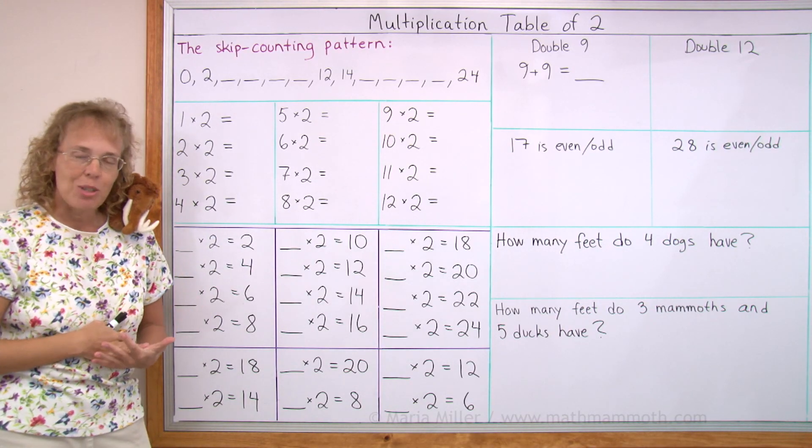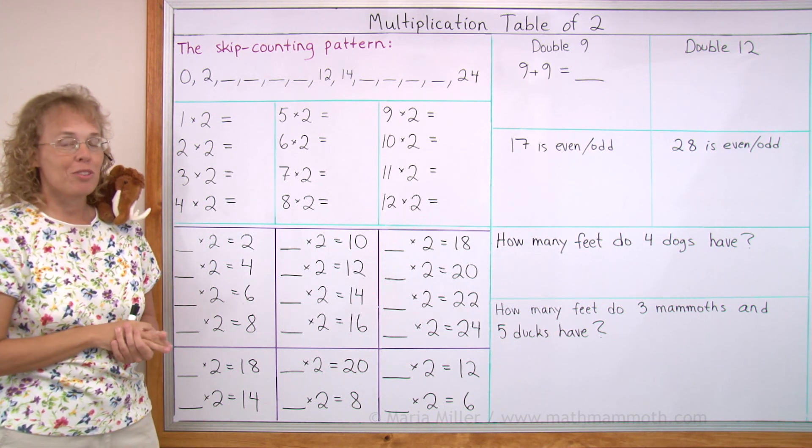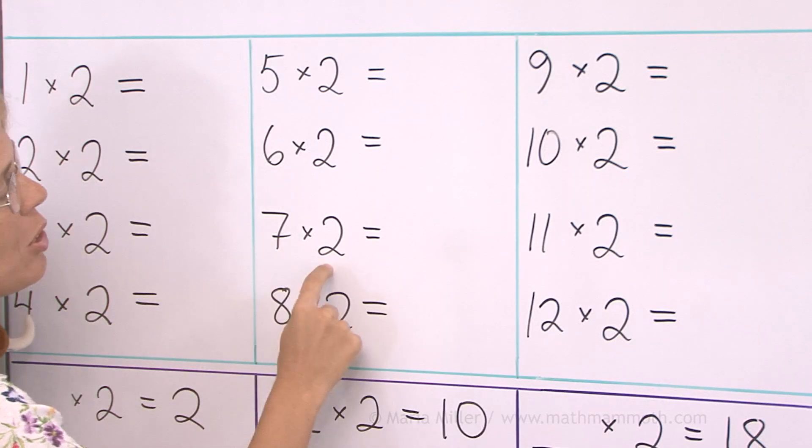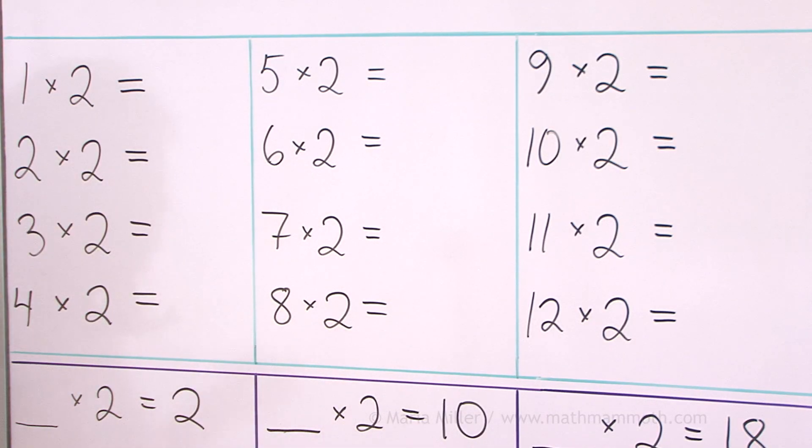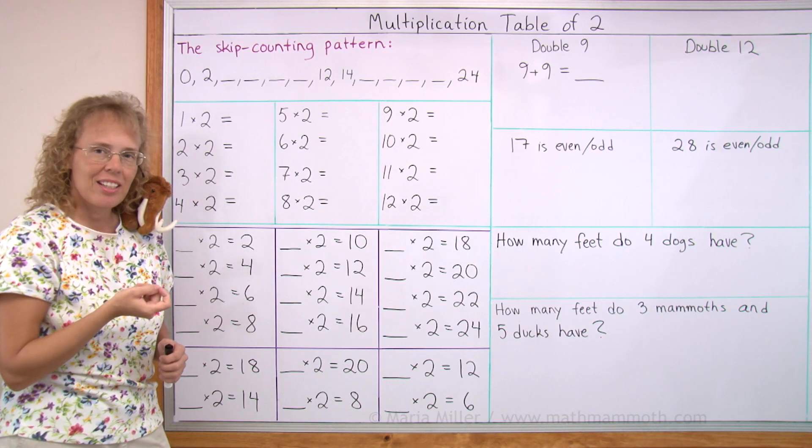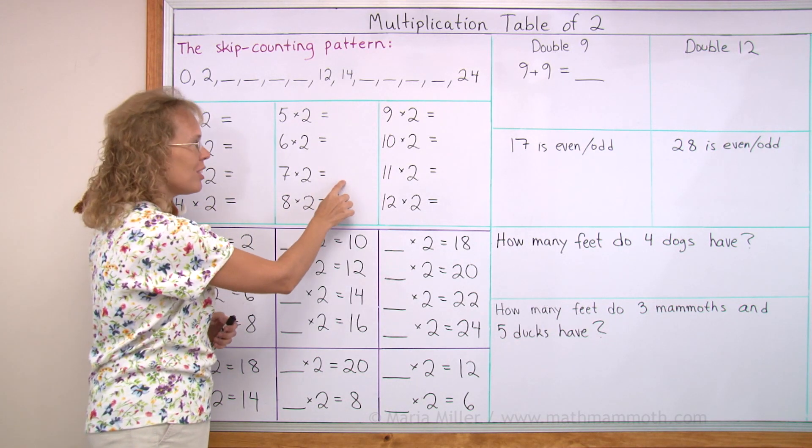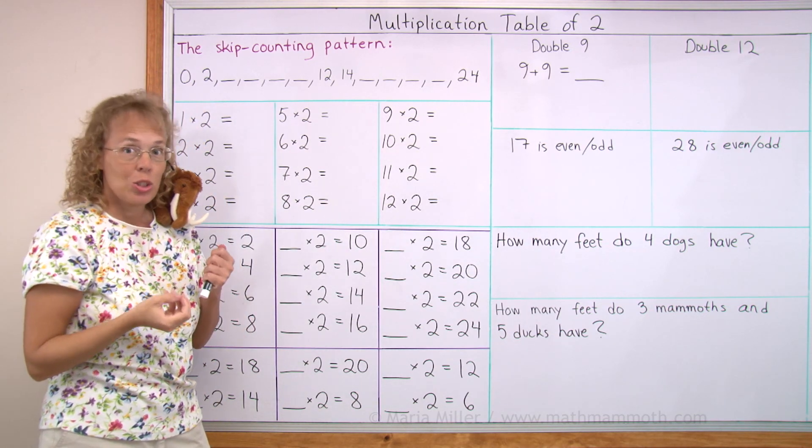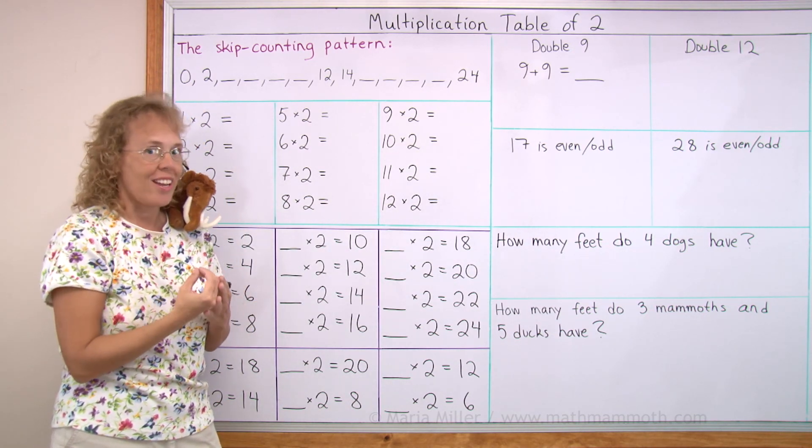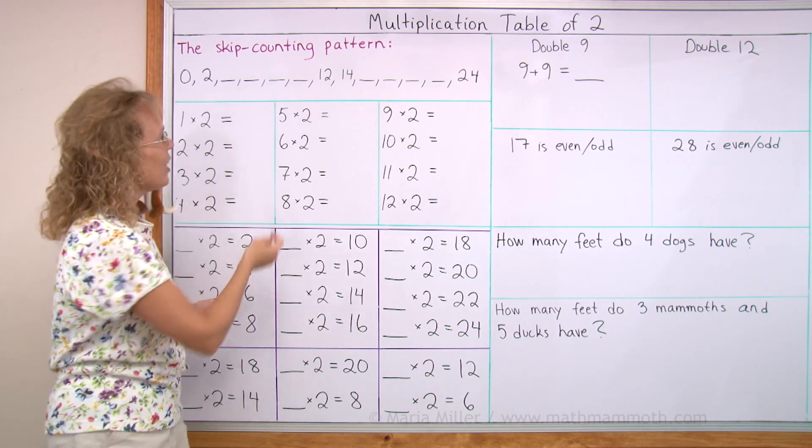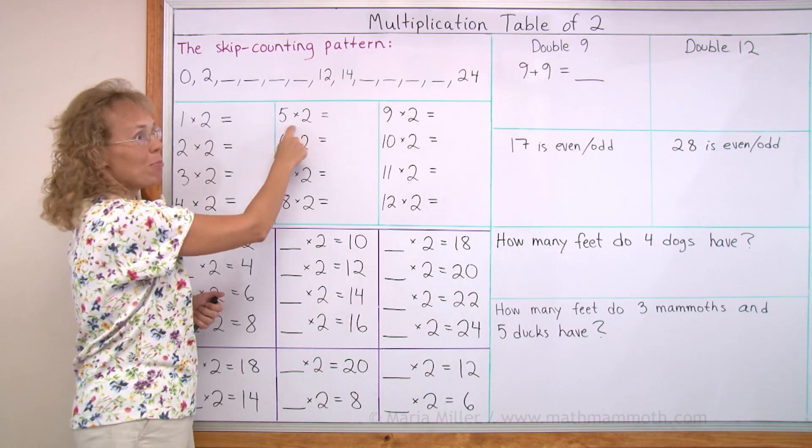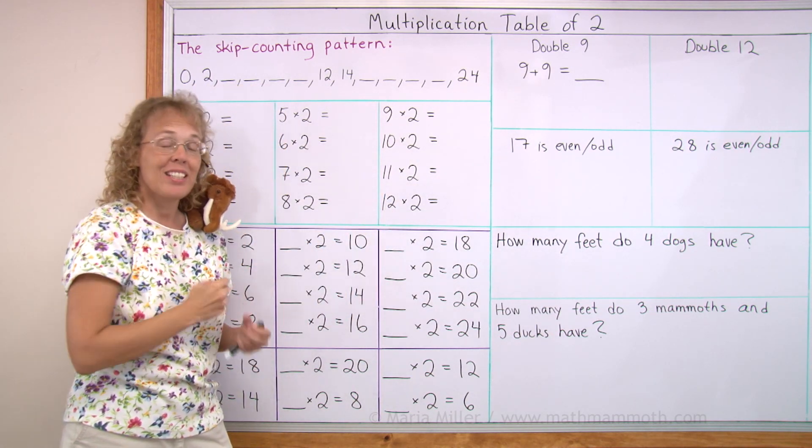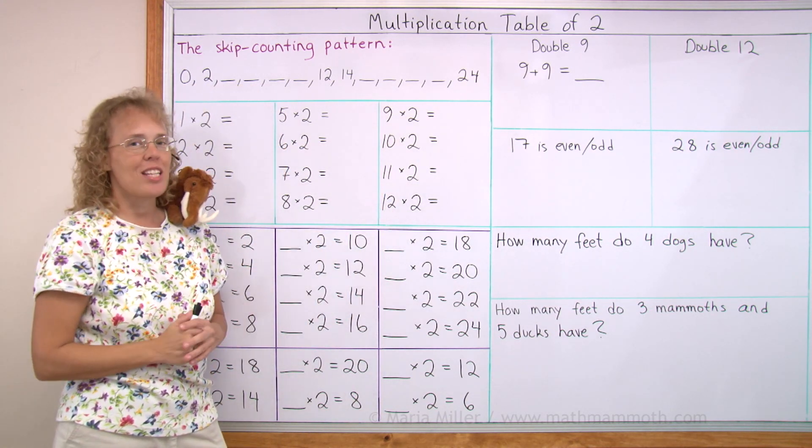And there's another easy part about the multiplication table of 2, and that is that you can use doubling. For example, 7 times 2 is the same as 2 times 7, double 7, 7 plus 7, so it's 14. Or 9 times 2 is the same as 2 times 9, 2 nines, 9 plus 9, 18. Or this one is the same as 5 plus 5, or this one is the same as 11 plus 11. Doubling. So you can use that too.